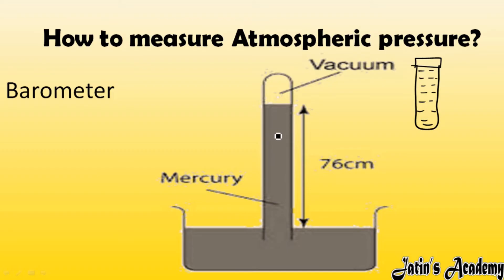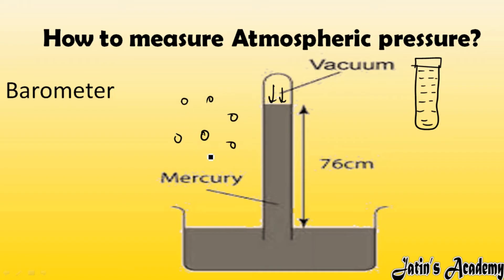When inverted in the trough, due to the weight of mercury and acceleration due to gravity, mercury moves downward. As mercury moves down, a vacuum is created inside the inverted test tube because there are no air particles inside. Outside, atmospheric pressure is higher, so these higher-pressure air particles force the mercury to move upward.